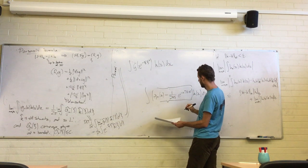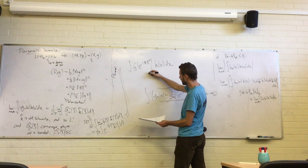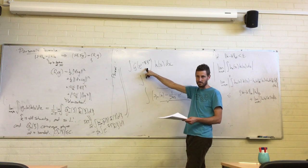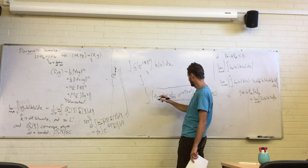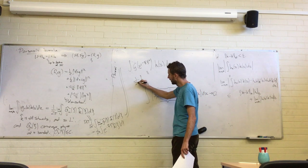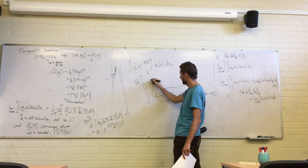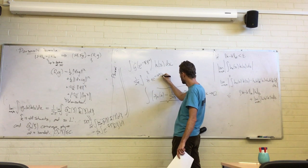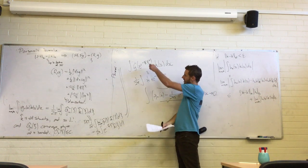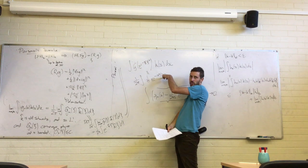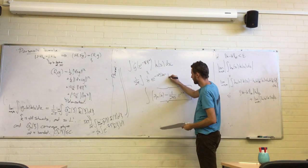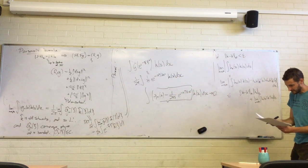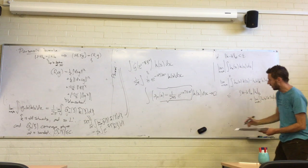The inverse Fourier transform of e^(-sigma²/2 · xi²) is of course a Gaussian: we get a factor 1/(2π) from the inverse Fourier transform and then 1/sigma · e^(-x²/(2sigma²)), using the formula for the Fourier transform of a Gaussian. And that's a version of the central limit theorem.